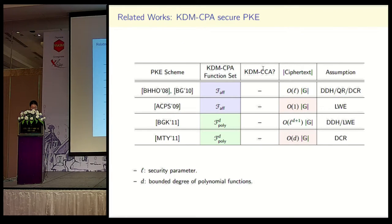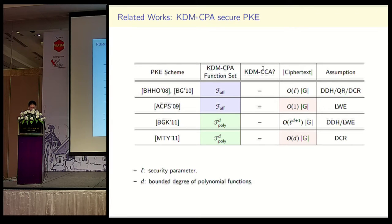BHHO proposed the first KDM-CPA secure PKE scheme in the standard model in 2008. However, the ciphertext is not compact — it consists of group elements linear in the security parameter L. ACPS also proposed KDM-CPA secure PKE for affine functions with compact ciphertexts. MTY provides KDM-CPA secure PKE for polynomial functions, but ciphertexts consist of many group elements.